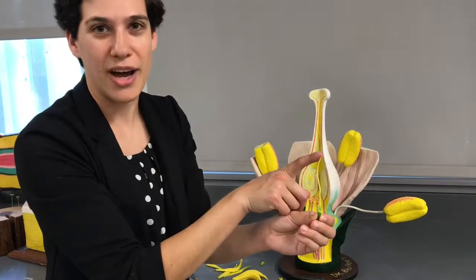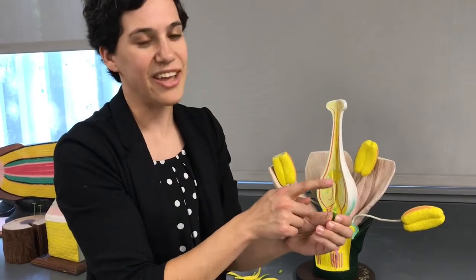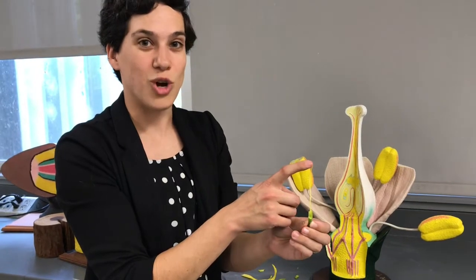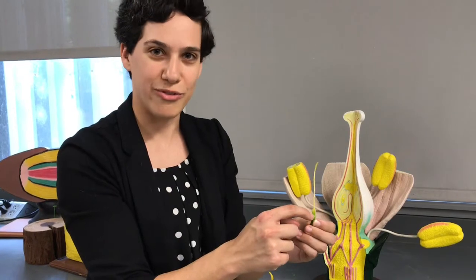We've got three parts of the carpel. We've got the stigma, which is sticky. That's where the pollen will stick to. We have the style, which is really long. And the pollen will actually grow a whole long pollen tube all the way through the style down to the ovary.